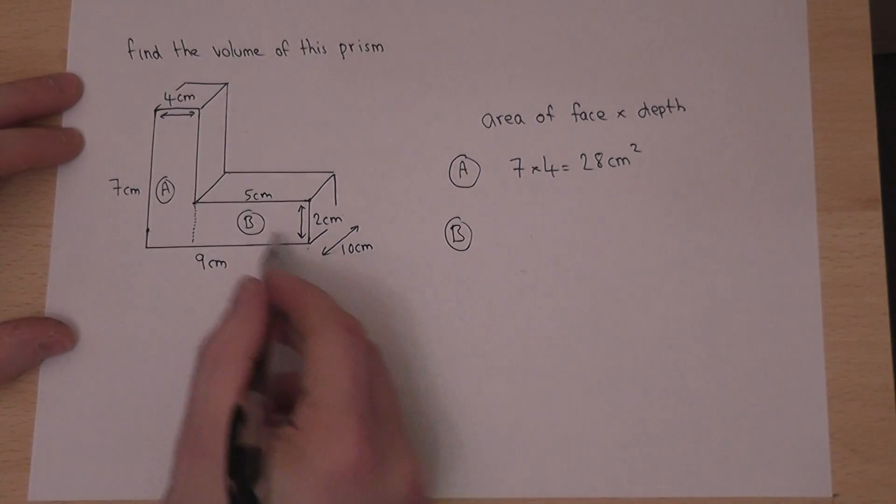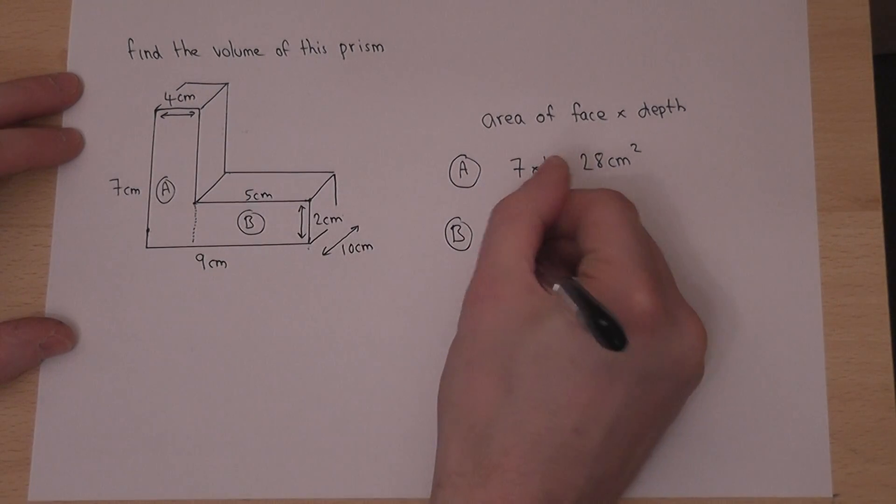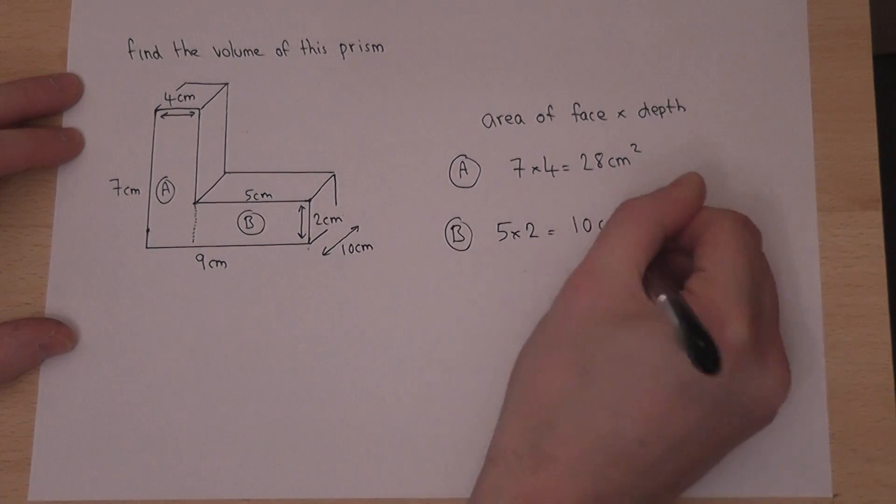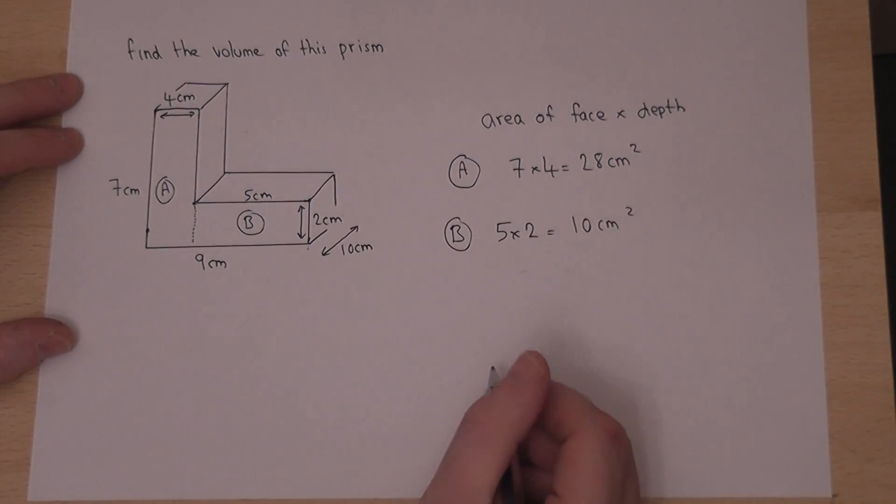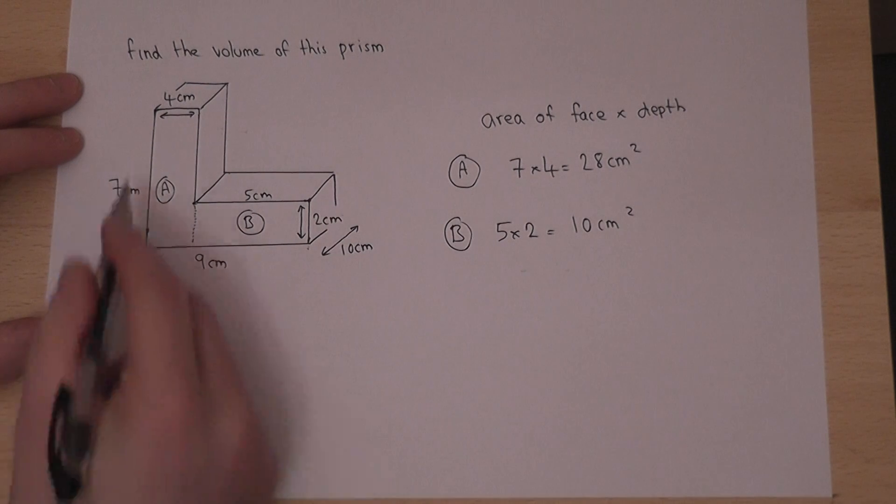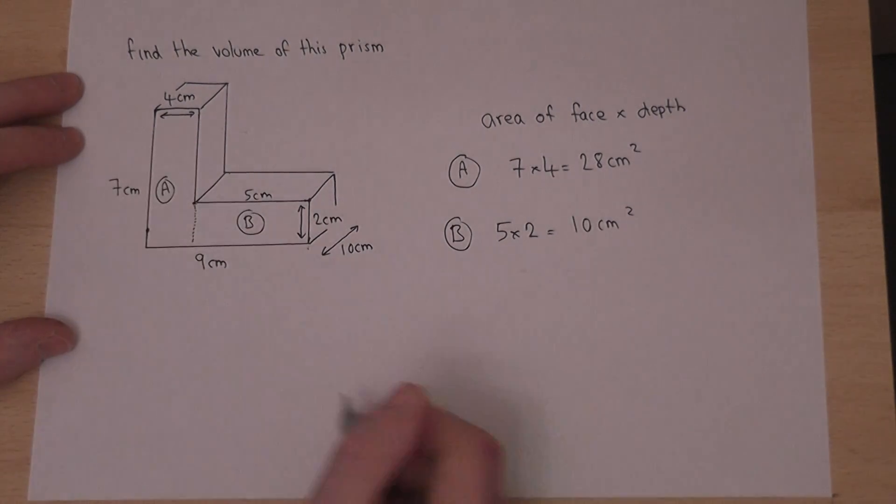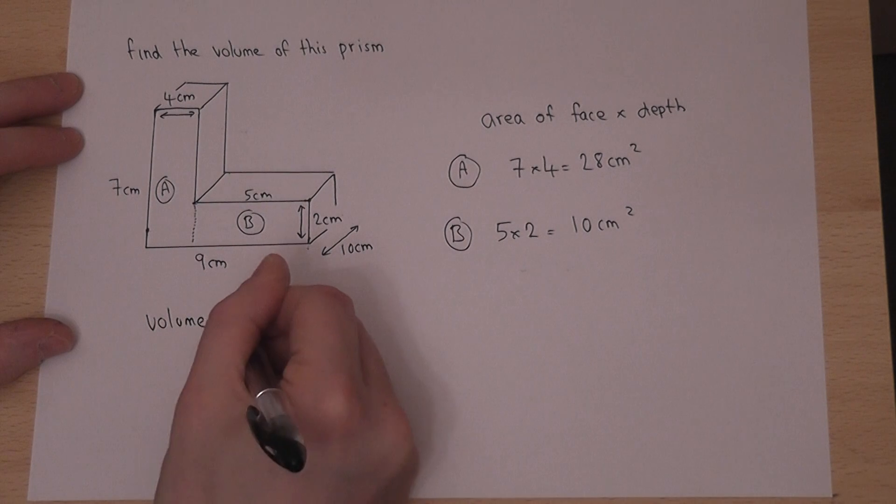So the area of B is 5 times 2, which is 10 centimeters squared. So the total area of the entire L must be 28 plus 10, which is 38.